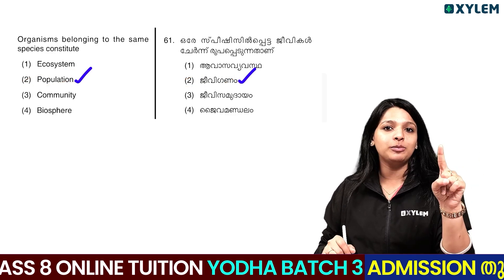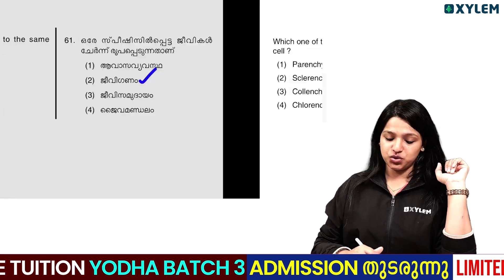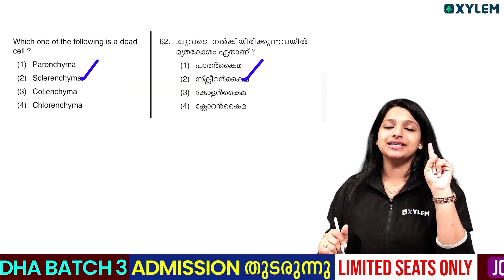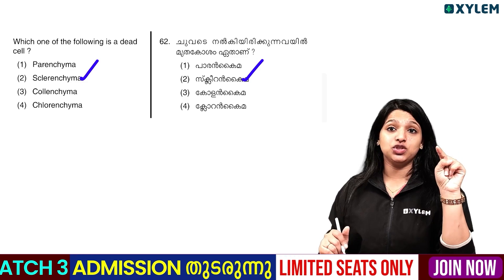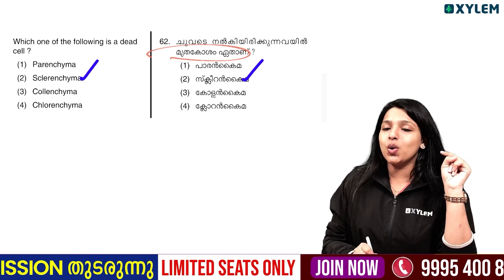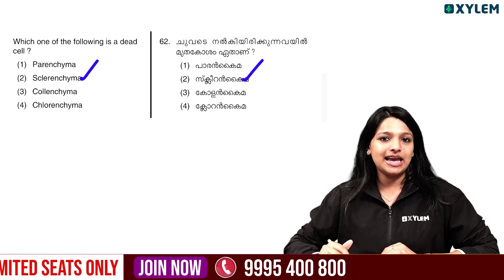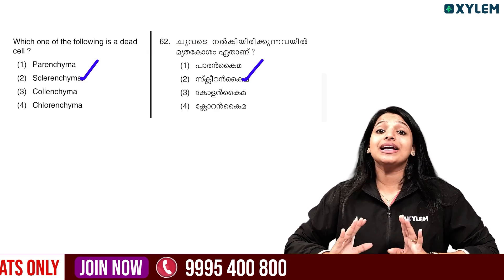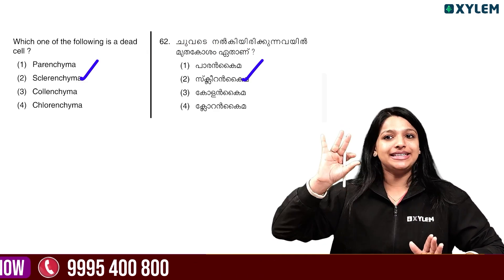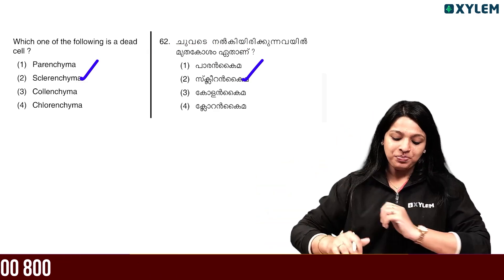Which one of the following is a dead cell? This is a dead cell. What happens in the brain — it is a dead cell. It does not show you a dead cell.